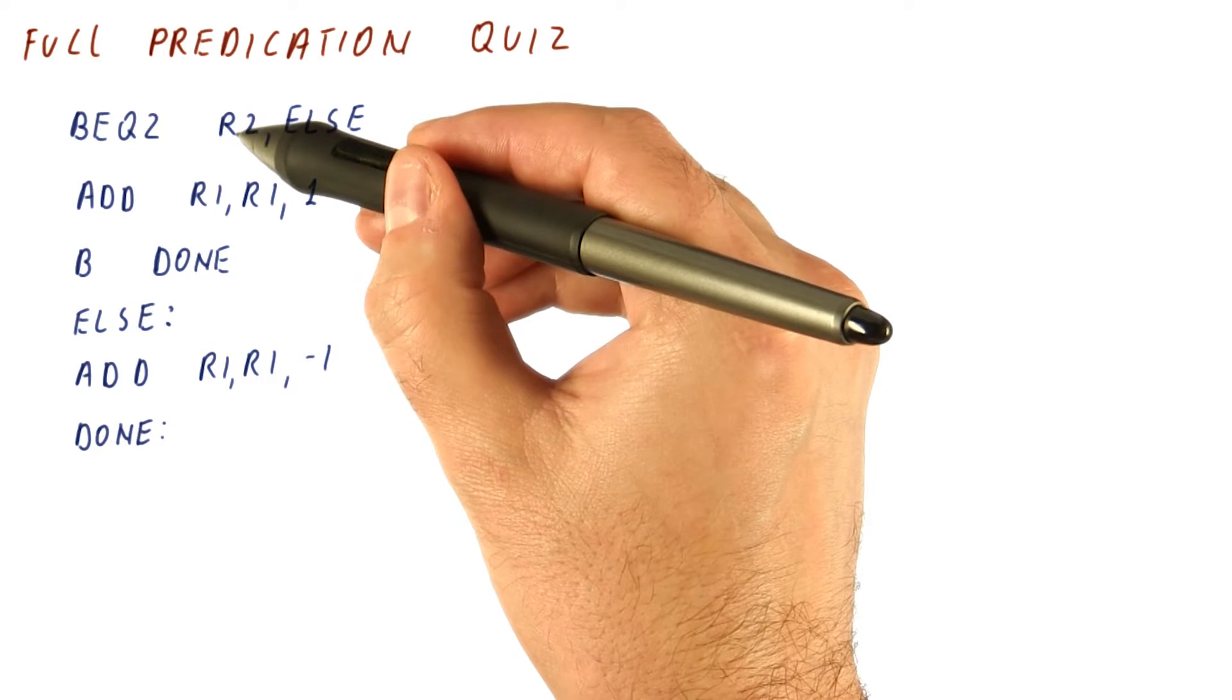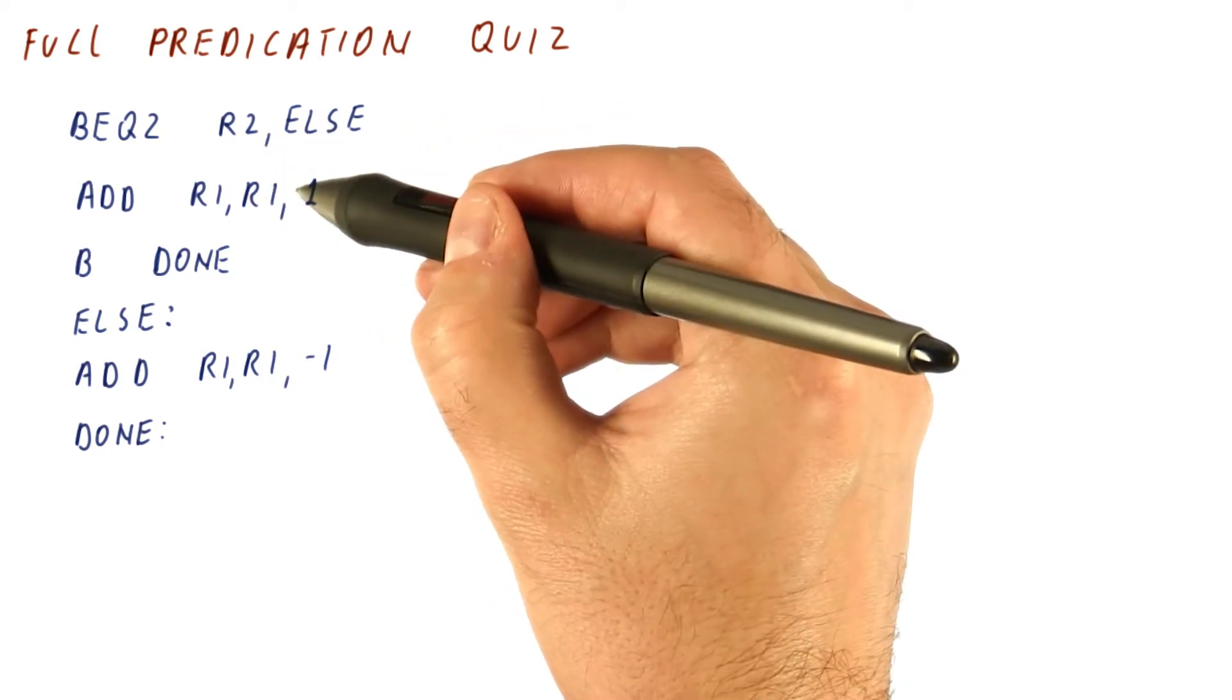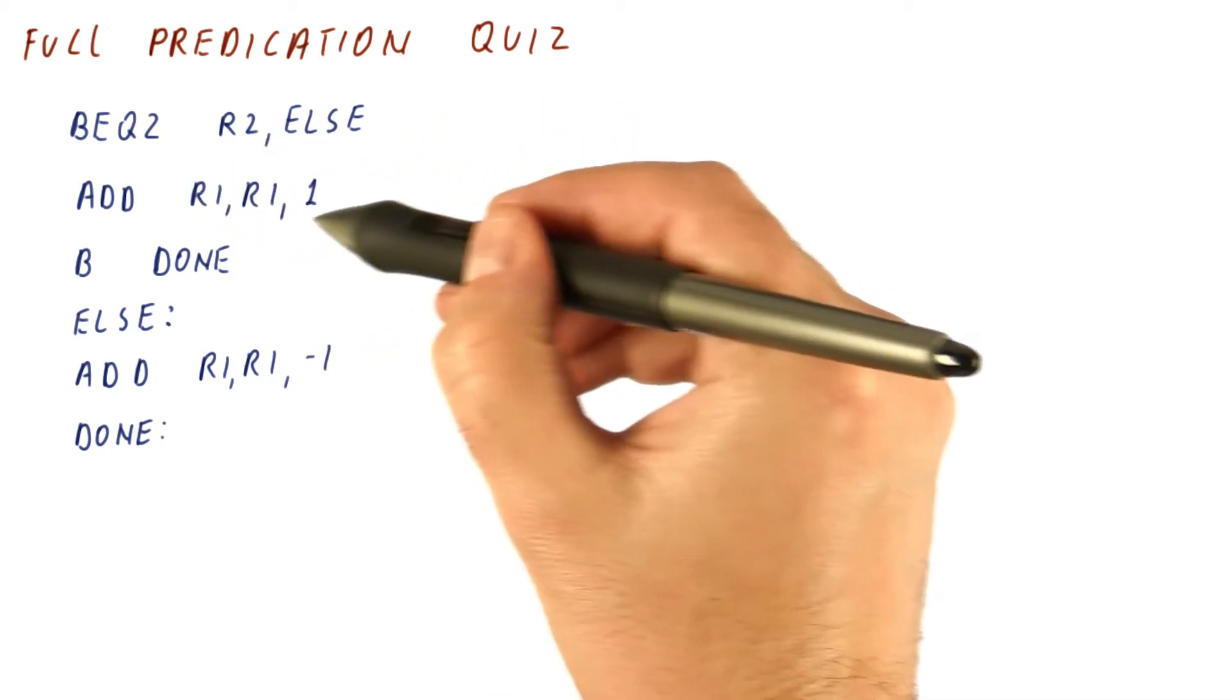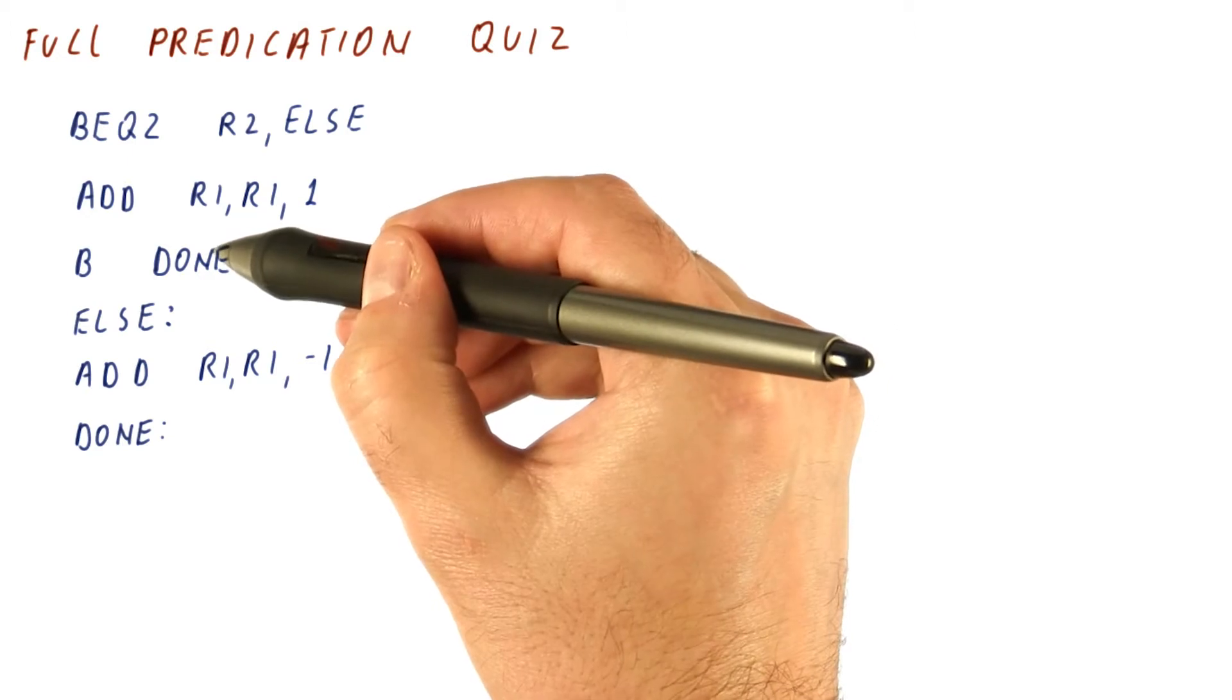If r2 is not 0, then we continue, increment r1 by 1, and then go out.